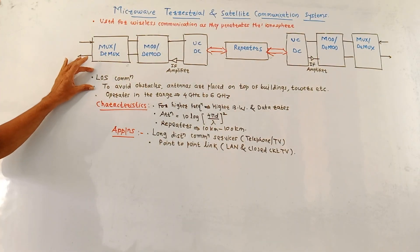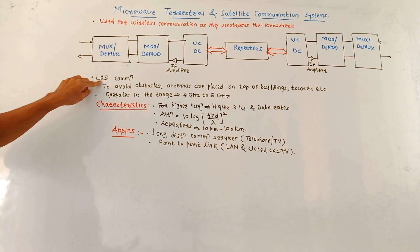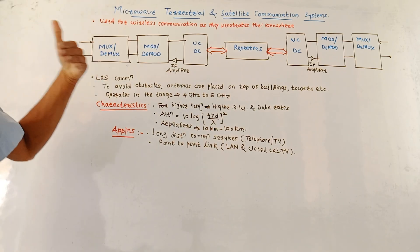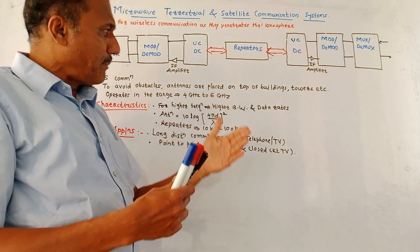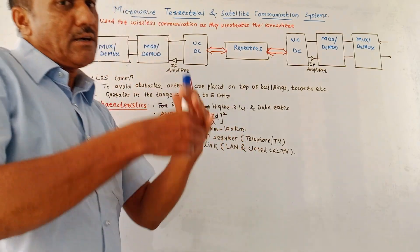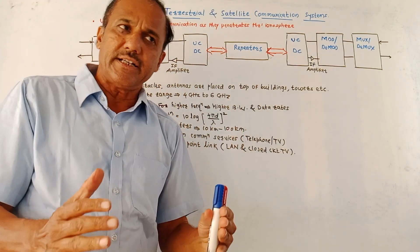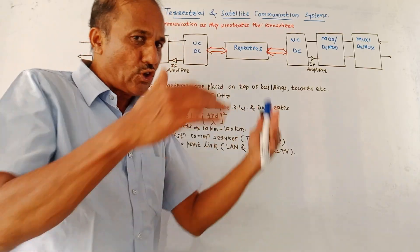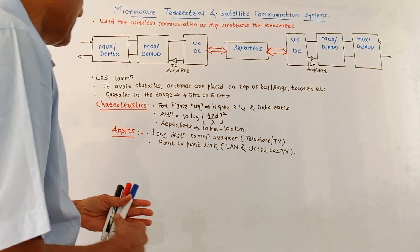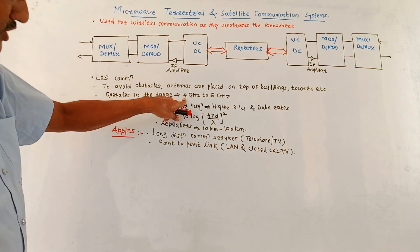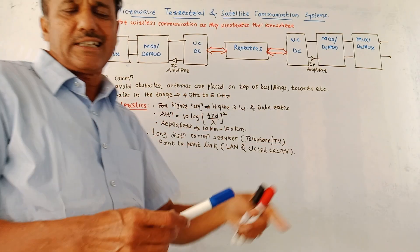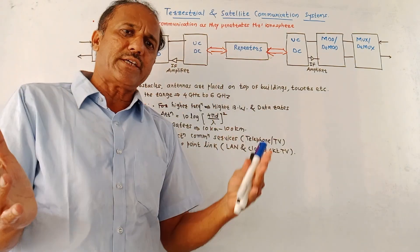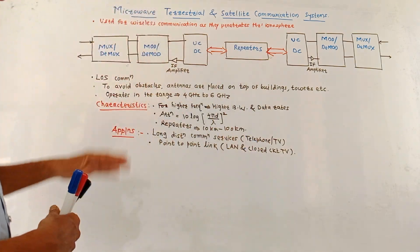This system is applicable for line of sight communication. To avoid obstacles, a number of repeaters are placed. Care is also taken that antennas are placed on the top of buildings, or antenna towers are used, or antennas are placed on mountains. The operating range is from 4 GHz to 6 GHz, though many systems make use of 2 GHz.